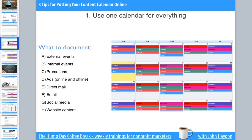So what should you include in your calendar? External events that are important to the community — for example, holidays, milestones, and commemorative events. For example, October is Breast Cancer Awareness Month, and that's a big deal for breast cancer organizations.